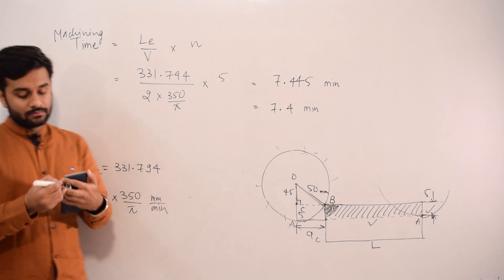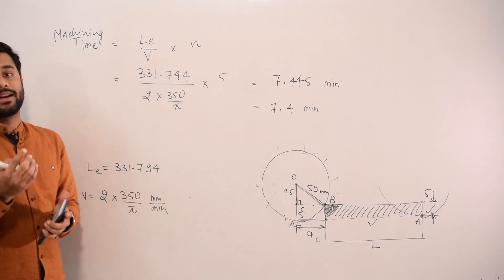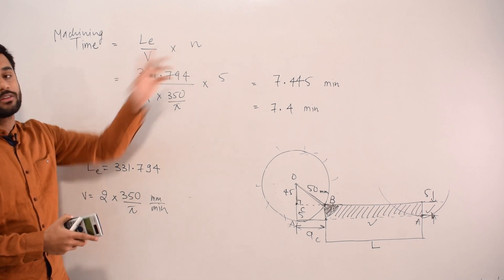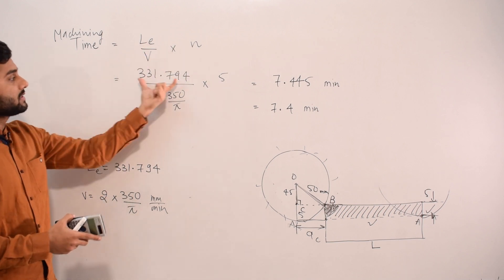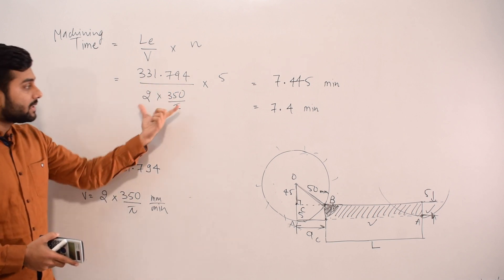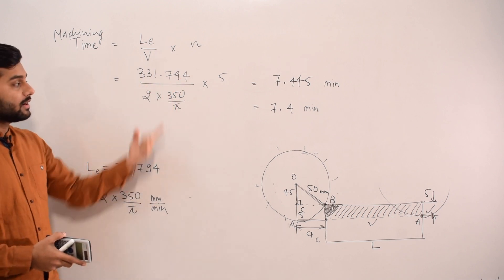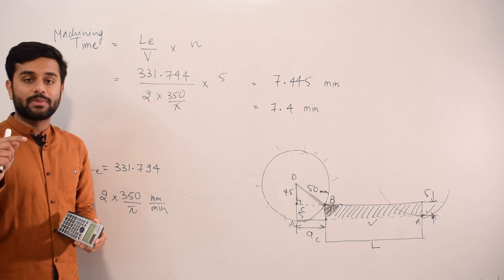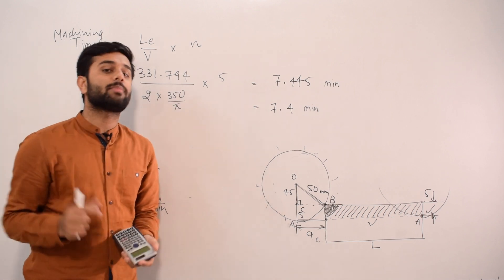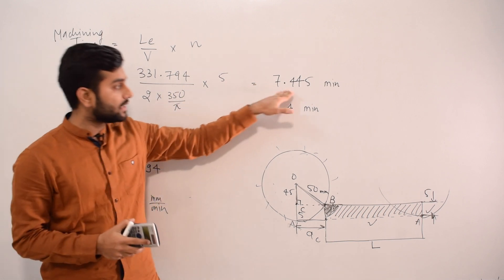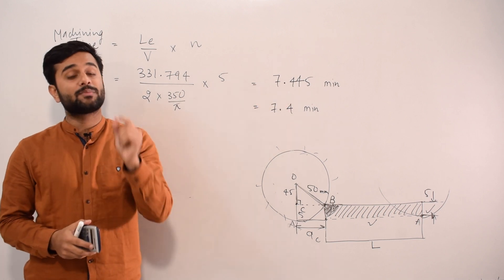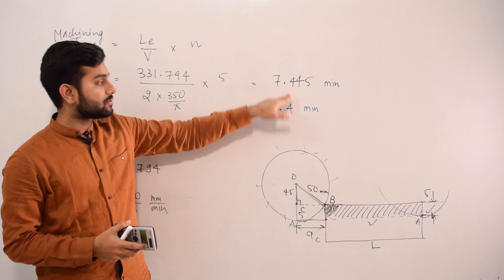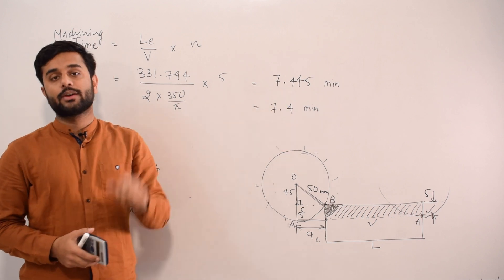To calculate total machining time: time = (effective length ÷ feed rate) × number of passes = (331.794 ÷ (700/π)) × 5. Simplifying this gives approximately 7.4 minutes. Since the question specifies rounding to one decimal place, the answer is 7.4 minutes.